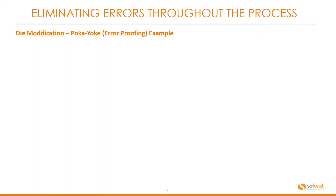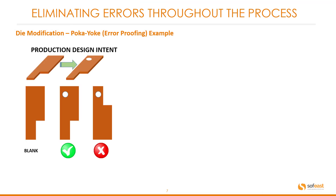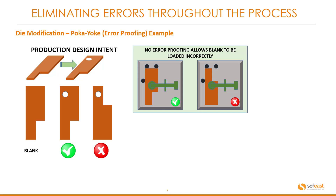Let's have a look at some more die modifications through Poka-Yoke error proofing examples. Here we have the production design intent — on the top, the blank and the final article with a hole in the top left hand corner. The incorrect position is with the blank flipped and the hole placed in the incorrect position. We can see on the left the blank is placed in the correct orientation, while on the right it is flipped and would be punched incorrectly.